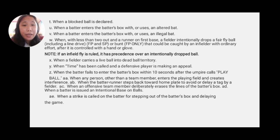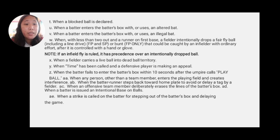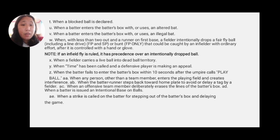Letter AA: when any person other than a team member enters the playing field and it creates interference. Letter AB: when the batter runner steps back toward home plate to avoid a tag by a fielder. Letter AC: when an offensive team member deliberately erases the lines of the batter's box. Letter AD: when a batter is issued an unintentional base on balls. Letter AE: when a strike is called on the batter for stepping out of the batter's box and delaying the game.